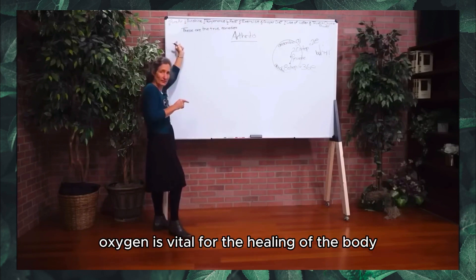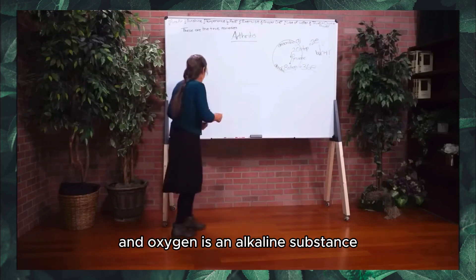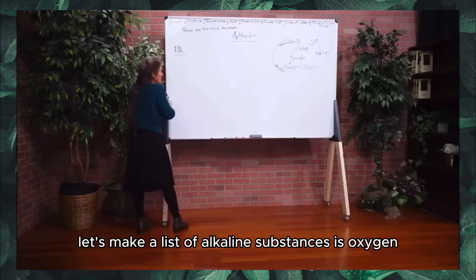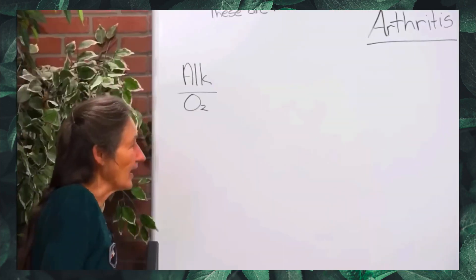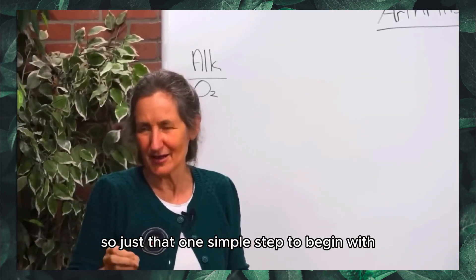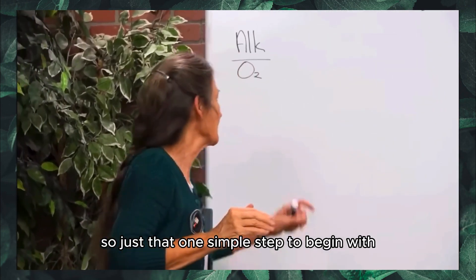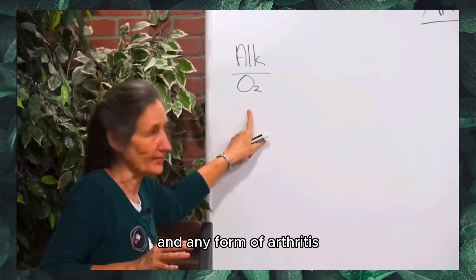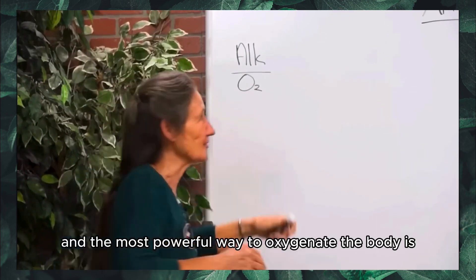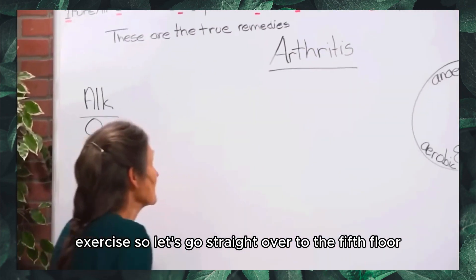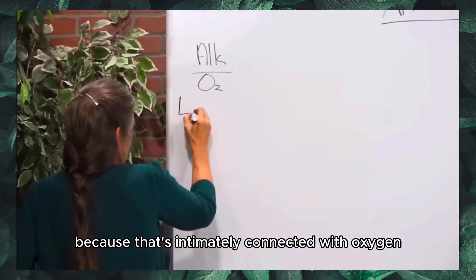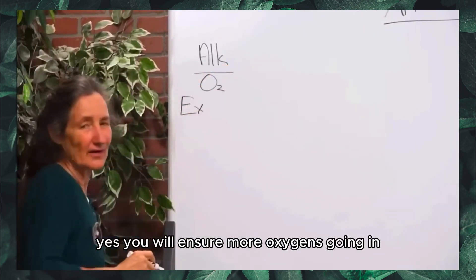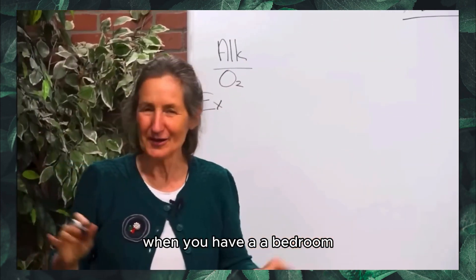Oxygen is vital for the healing of the body, and oxygen is an alkaline substance. So let's list alkaline substances — oxygen is one. Arthritis thrives in an acid environment, so just that one simple step of oxygenating the body can make a difference with arthritis and gout. The most powerful way to oxygenate the body is exercise. You'll also ensure more oxygen intake when you sleep with your bedroom windows open.